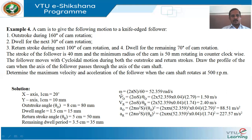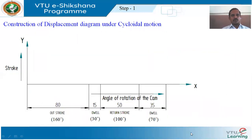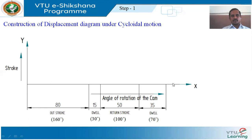Like this we can determine angular velocity, maximum velocity during outstroke and return stroke, and maximum acceleration during outstroke and return stroke. Now we will see how to construct the displacement diagram under cycloidal motion step by step. Under step 1, at any convenient position draw a line along the x-axis representing angle of rotation of the cam, and along the y-axis the stroke — that is, displacement of the follower.